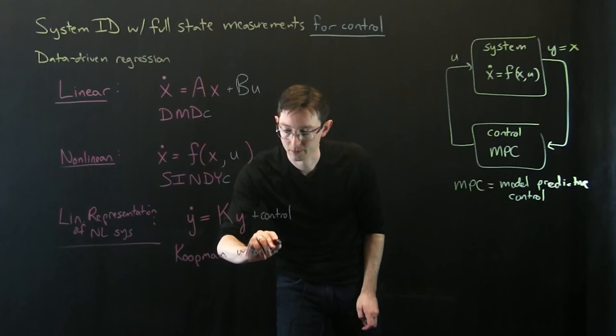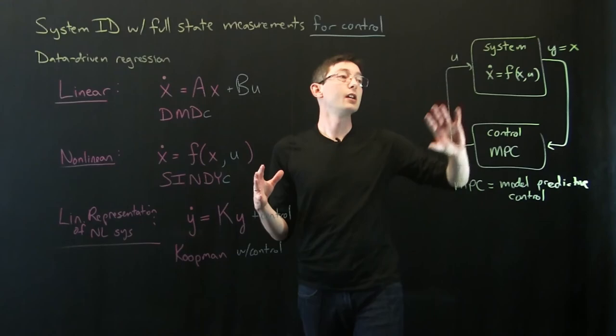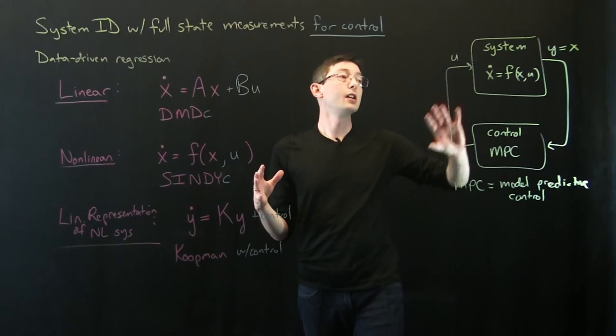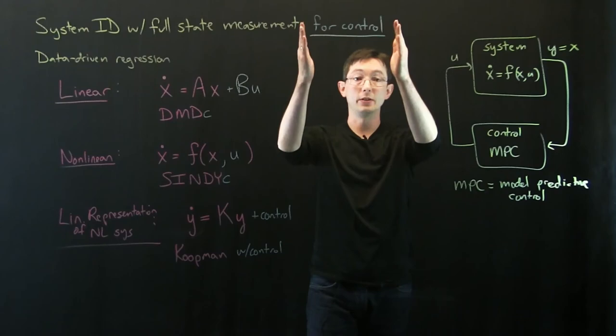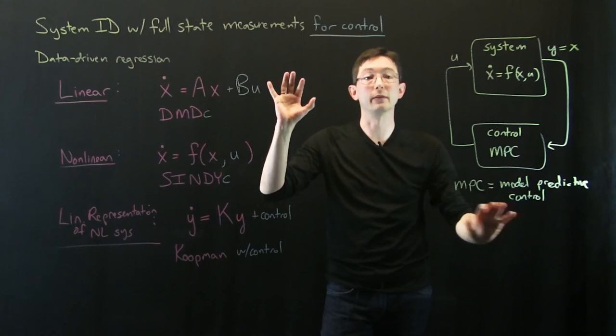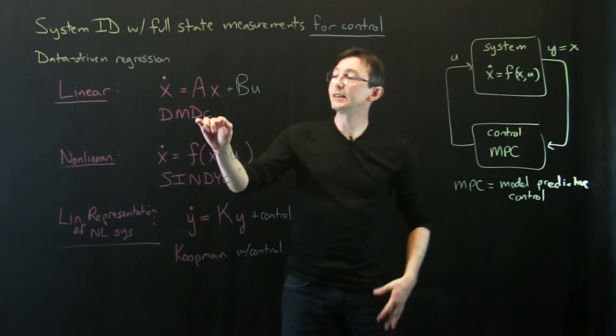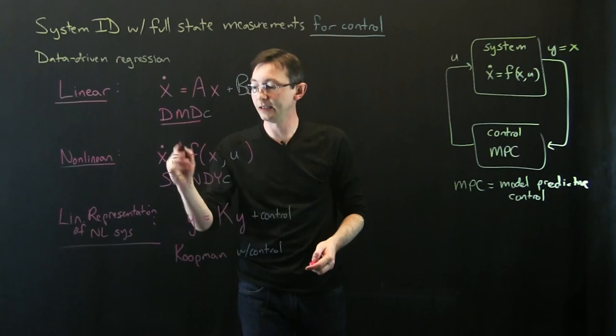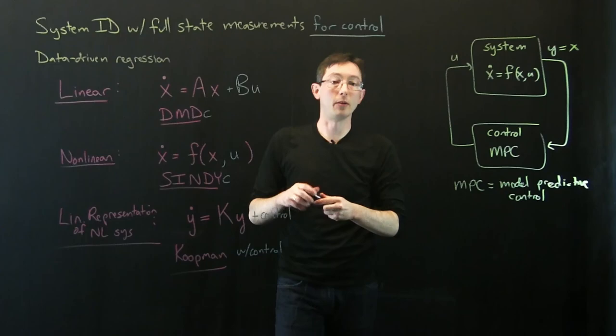This is basically the overview of what we'll do over the next few lectures: system identification, both linear and nonlinear, for systems where we assume full-state measurements and want to do control. We'll build system models from data using regression and use them for control, for example using model predictive control. This builds on related lectures on dynamical systems, DMD, SINDy, and Koopman, and what we'll focus on now is how to modify those methods to add control.